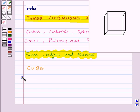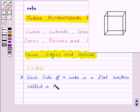Now each side of a cube is a flat surface called a face.